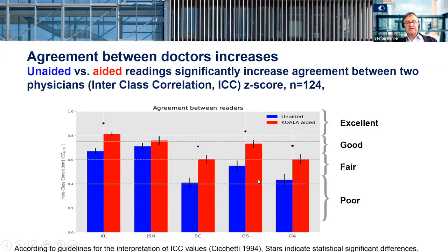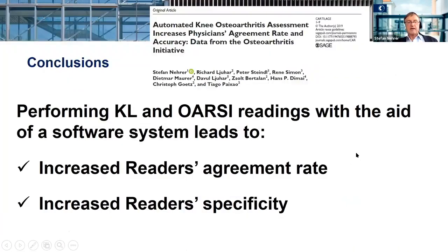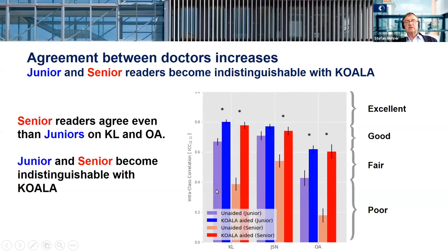We see that in blue — unaided without the computer system — and in red with the computer system. In all parameters we achieve a better inter-class correlation, reaching good or excellent. Performing Kellgren-Lawrence and radiological readings with the aid of the software leads to increased reader agreement and increased reader specificity. As an educational tool, using such a program gives a better standardized, harmonized data set.